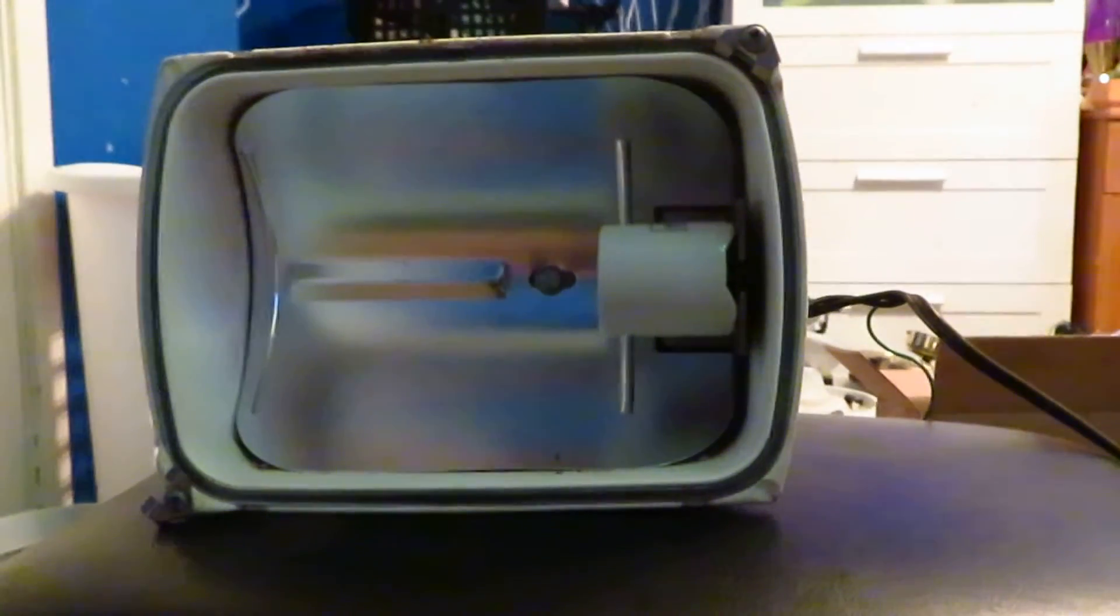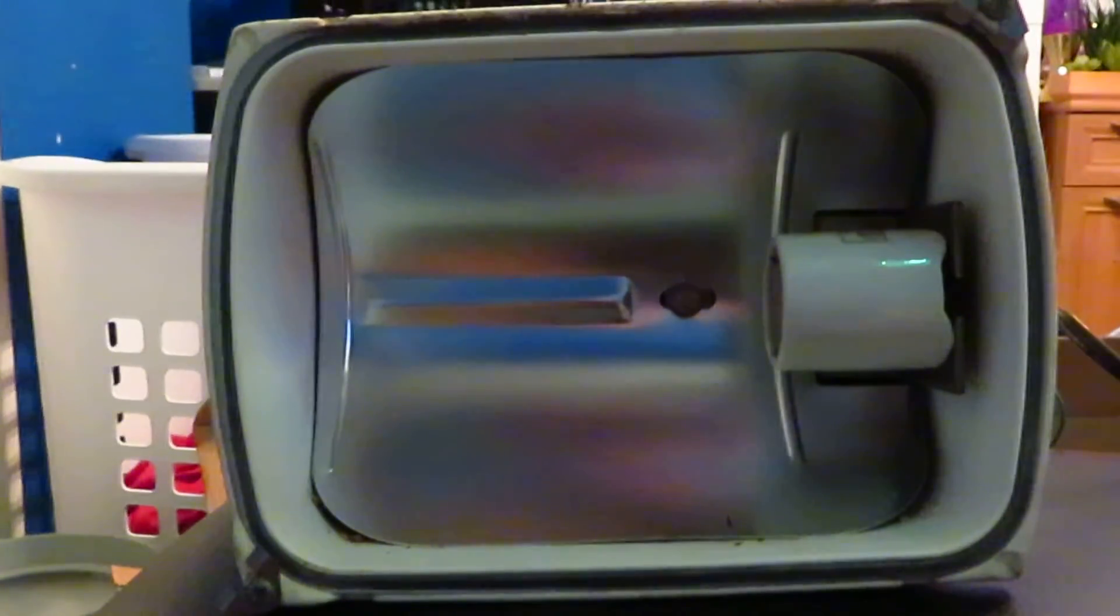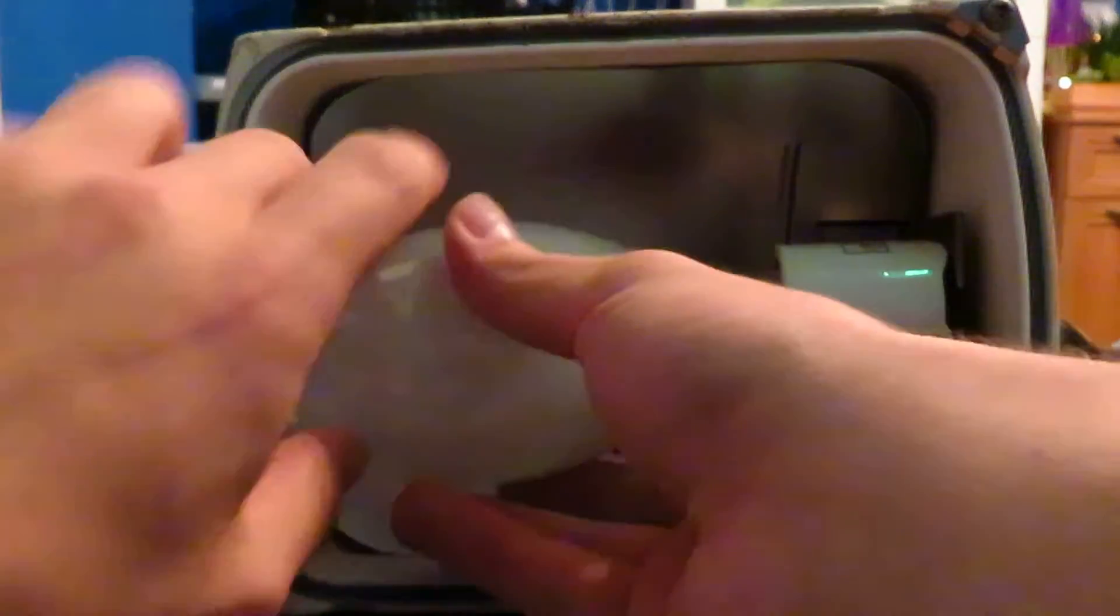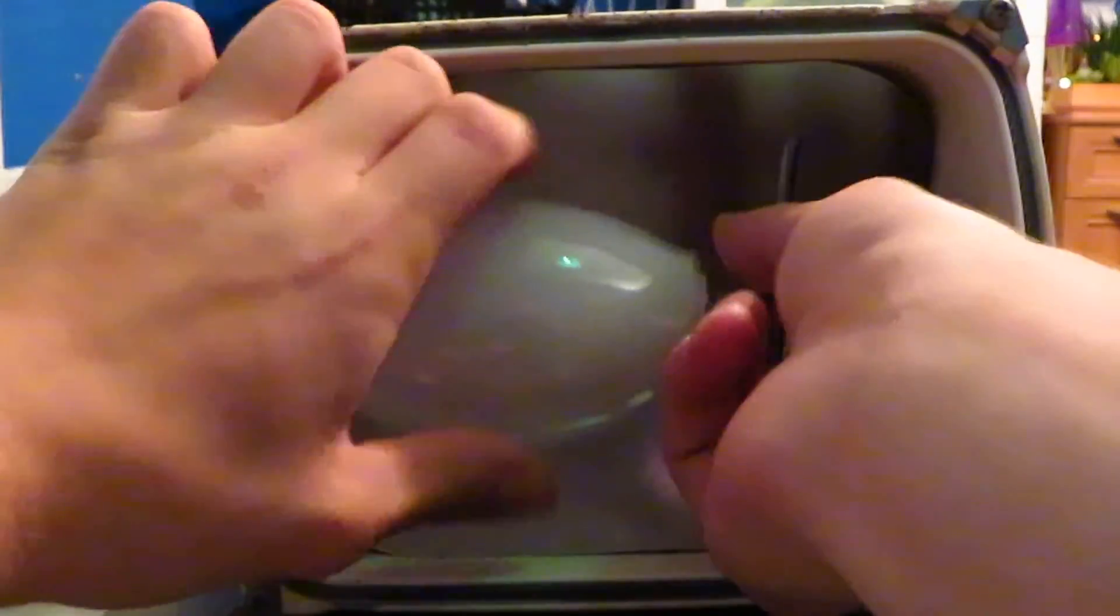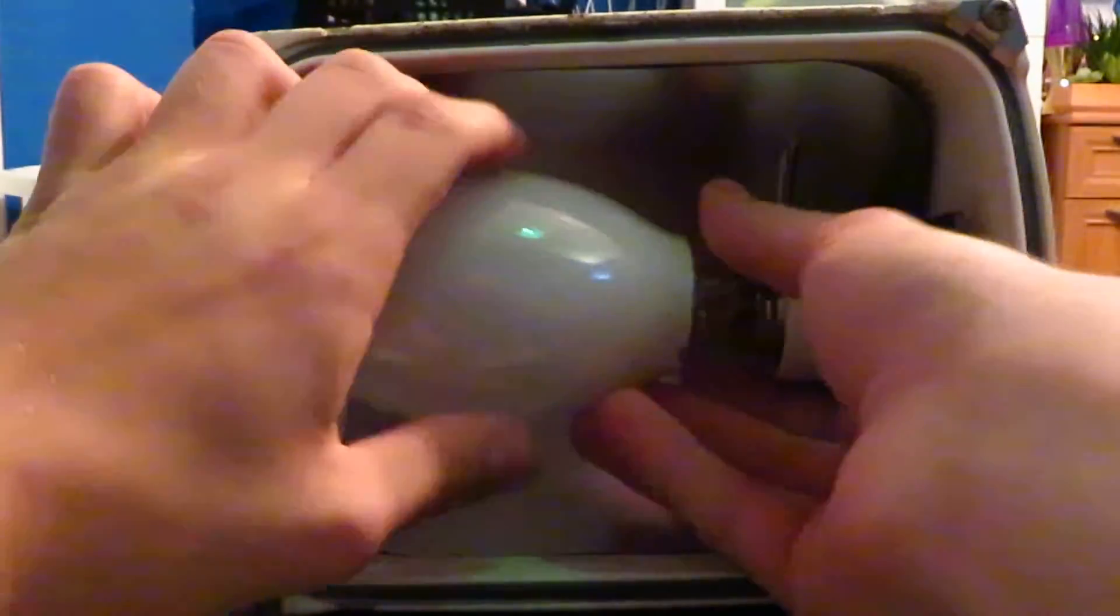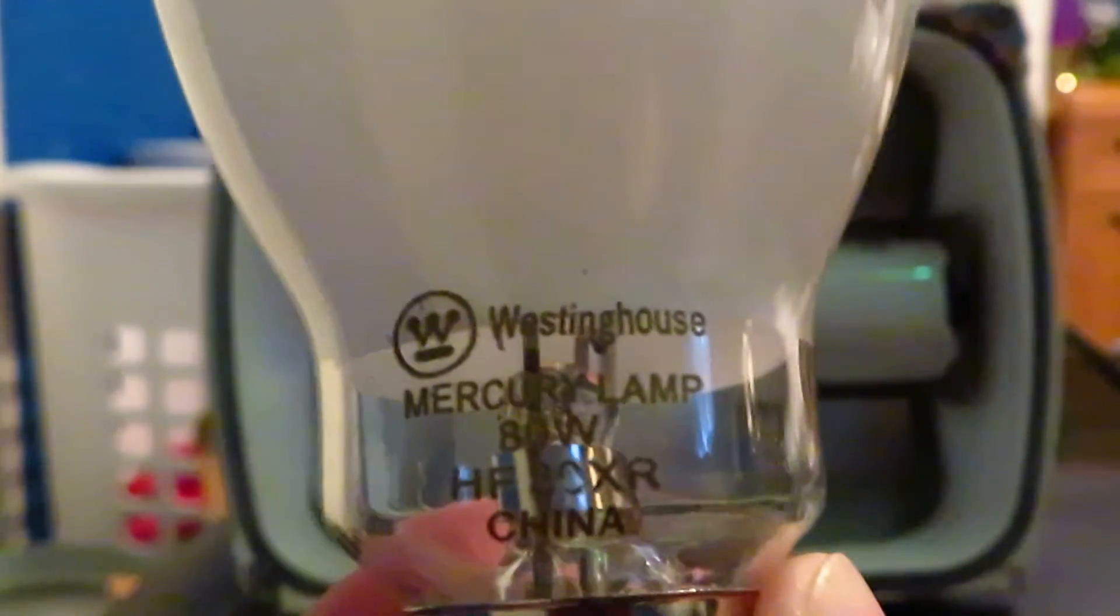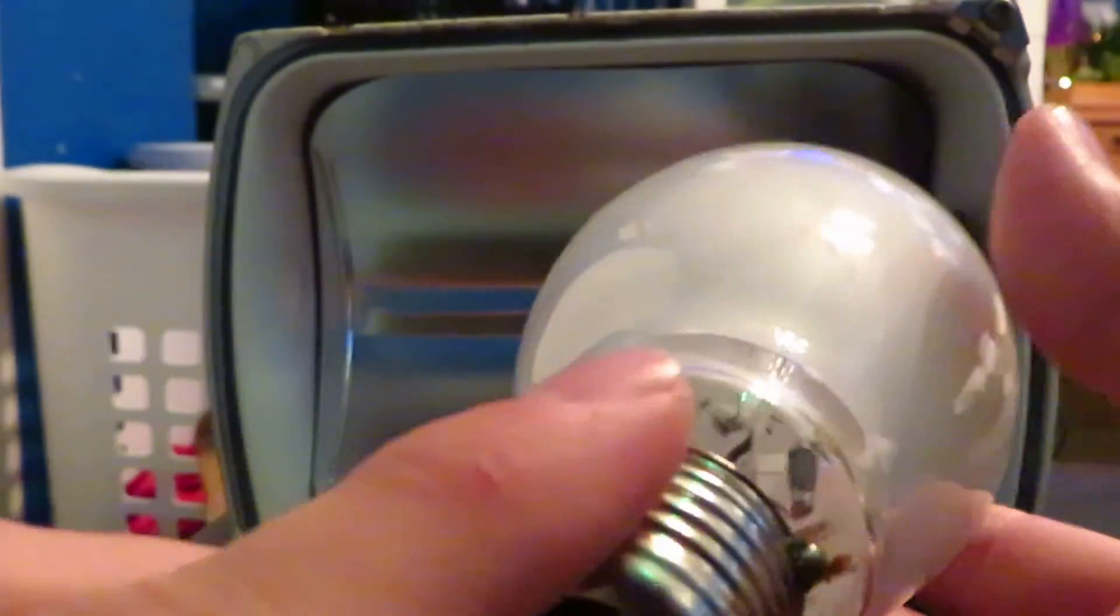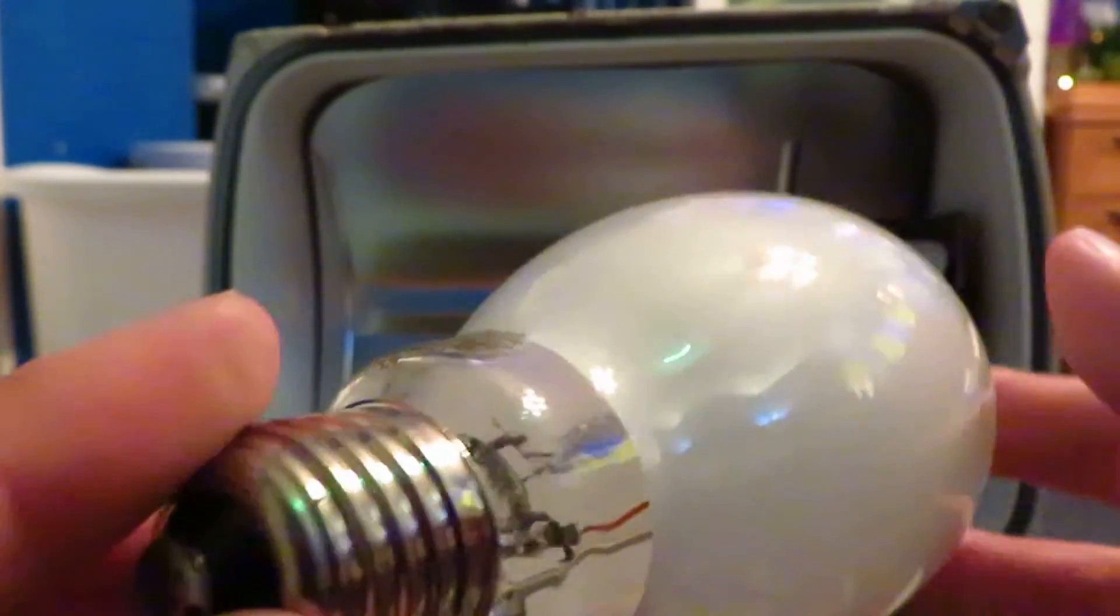Unfortunately, I don't have a way to test the mercury vapor lamp without removing this ballast assembly, which I can do just fine. There's lots of bugs behind there, though, so I'm going to have to do that over a... Well, actually, let me show you this first.